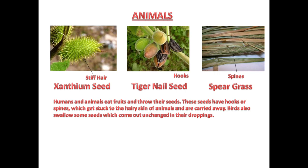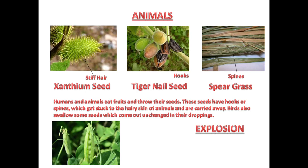The last agent of dispersal is explosion. There are some plants, like the peapod, that burst open and scatter their seeds near the parent plant to further grow into new plants. This concludes our topic of dispersal of seeds.